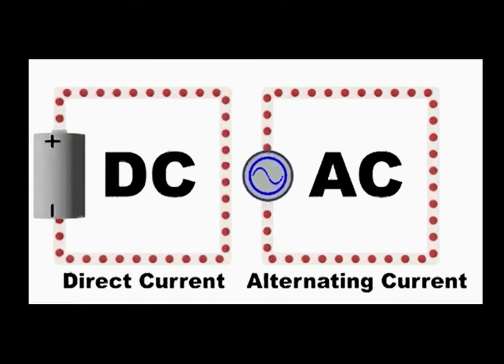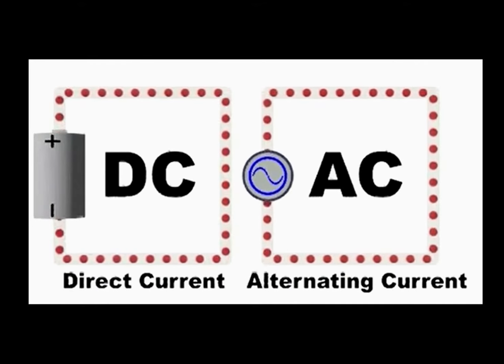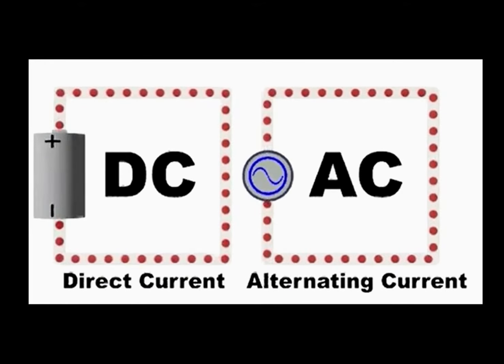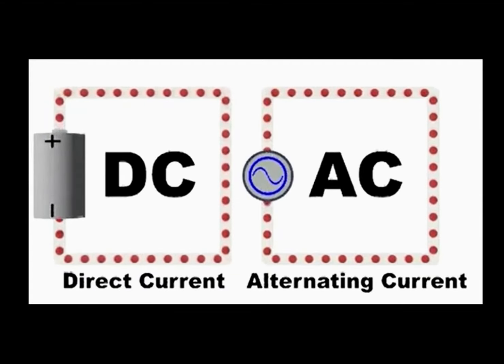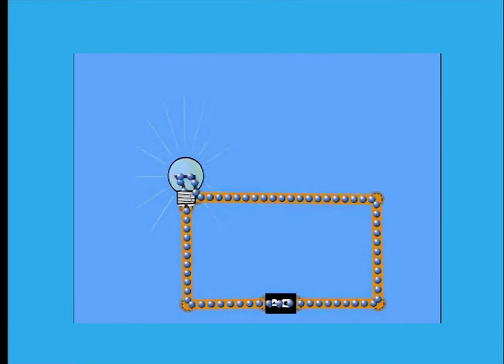That is, in AC, the electrons continuously move back and forth, which is like if the frequency is 50 Hz, then they move 50 times back and forth in 1 second. Then, how are the appliances running in AC? It is like this. The bulb is glowing even though the supply is AC. That is, the electrons are moving back and forth.